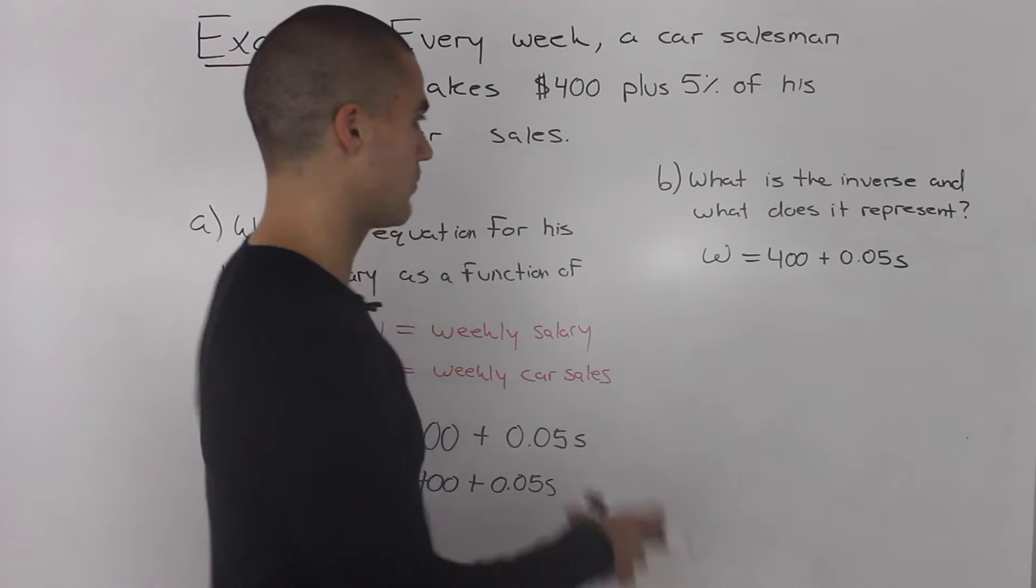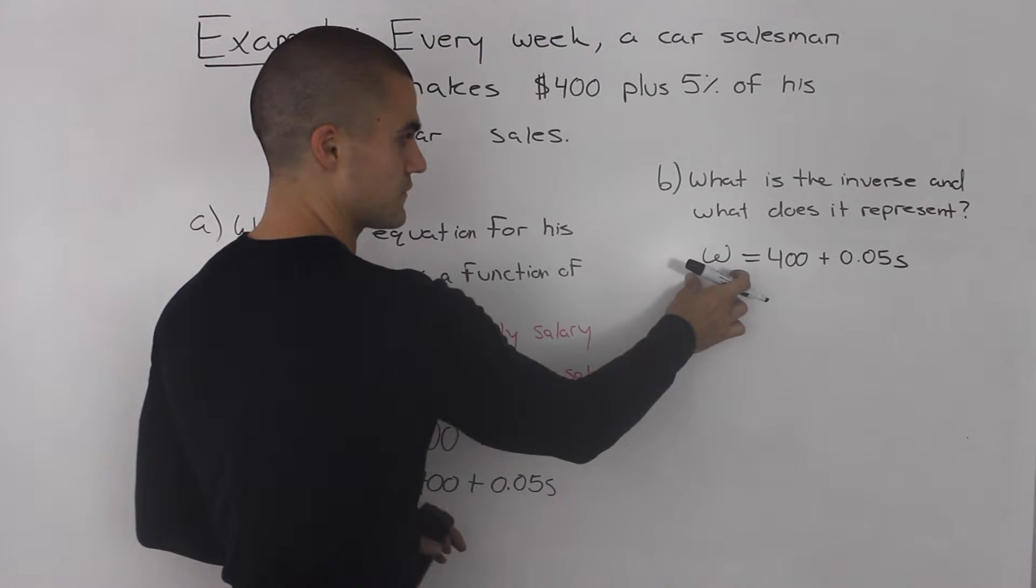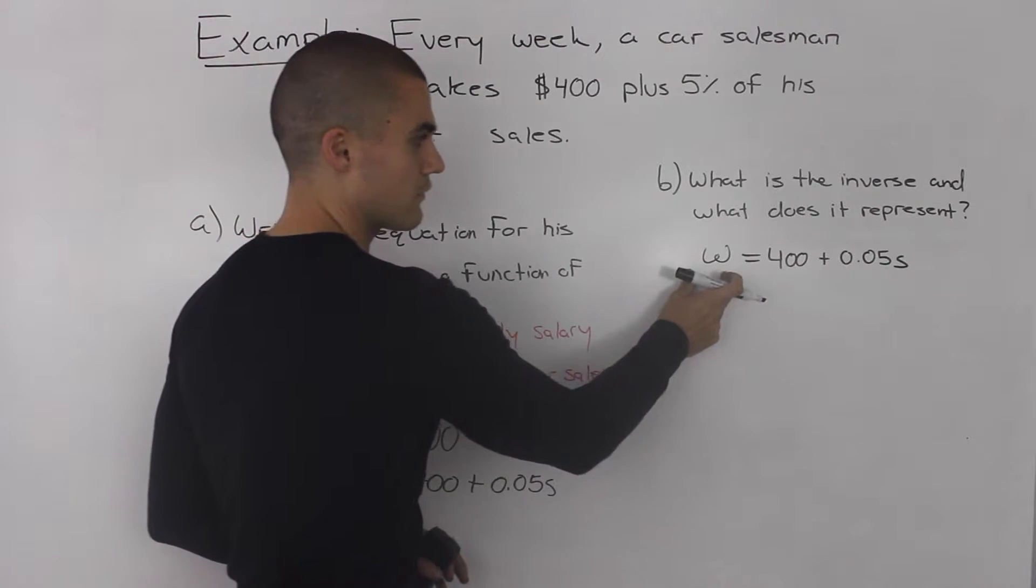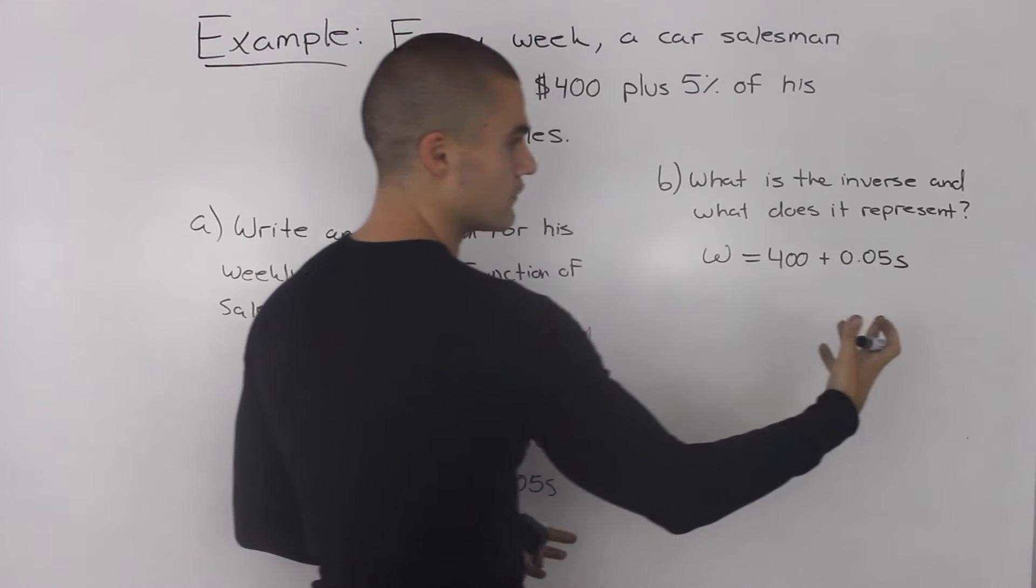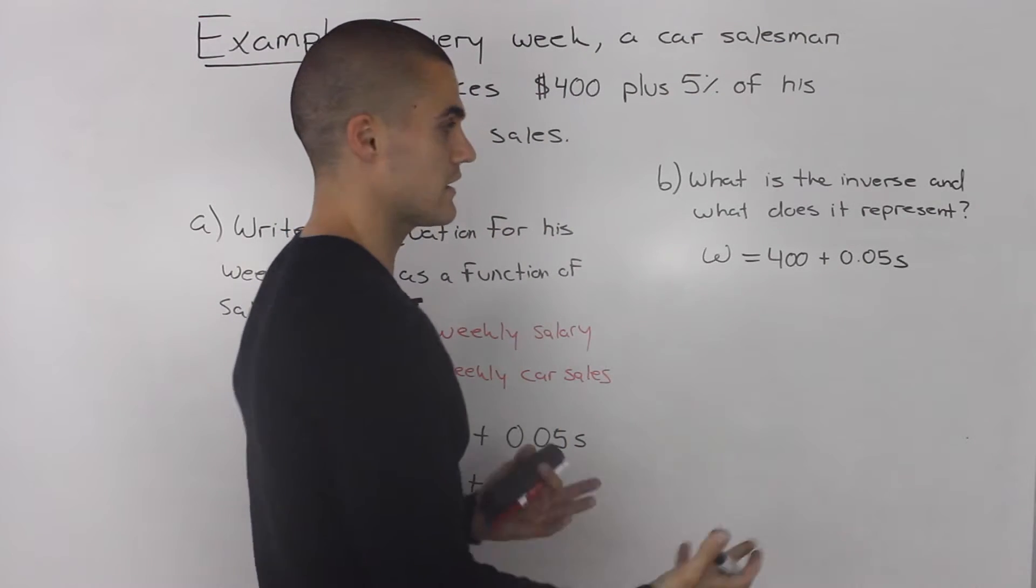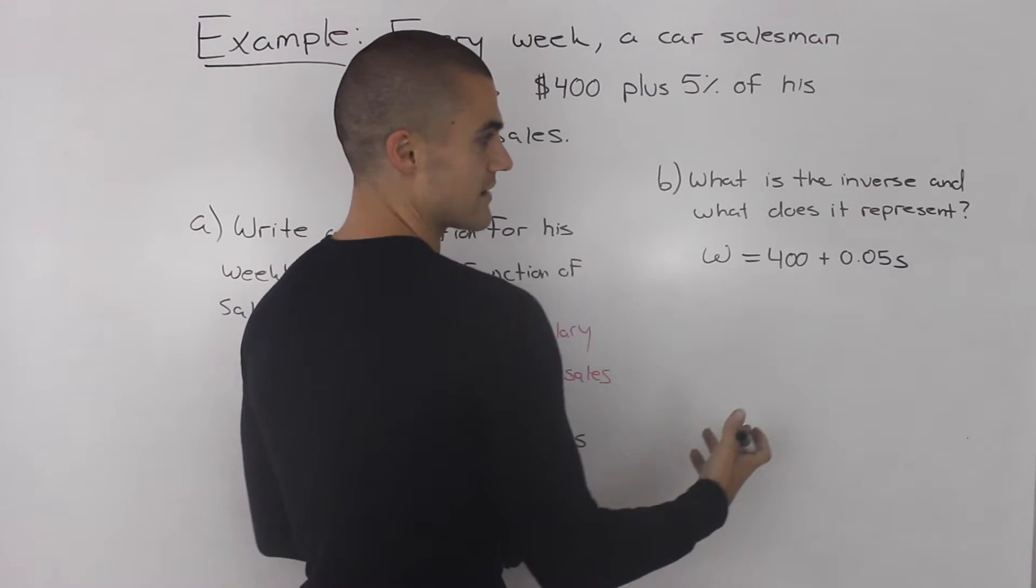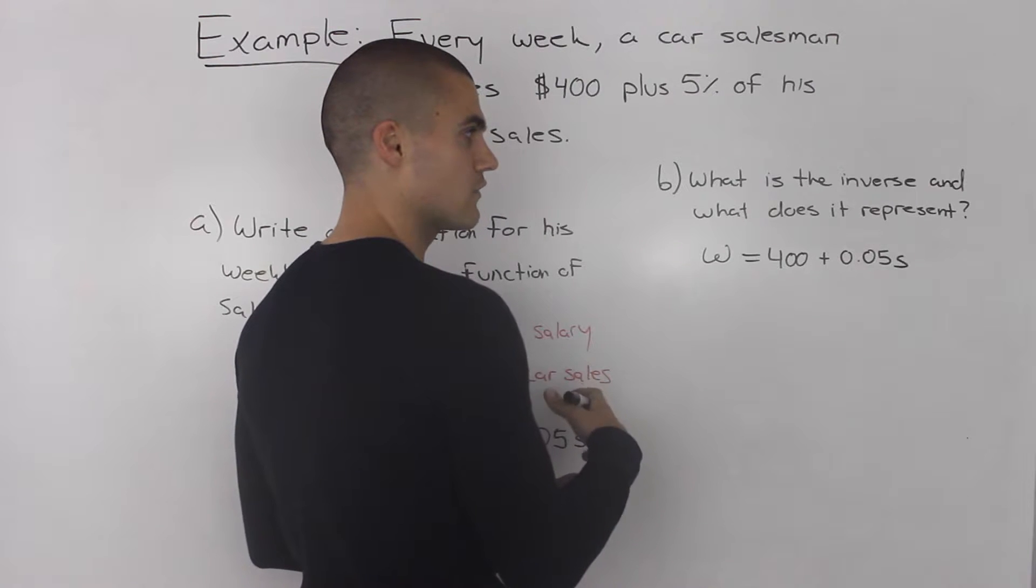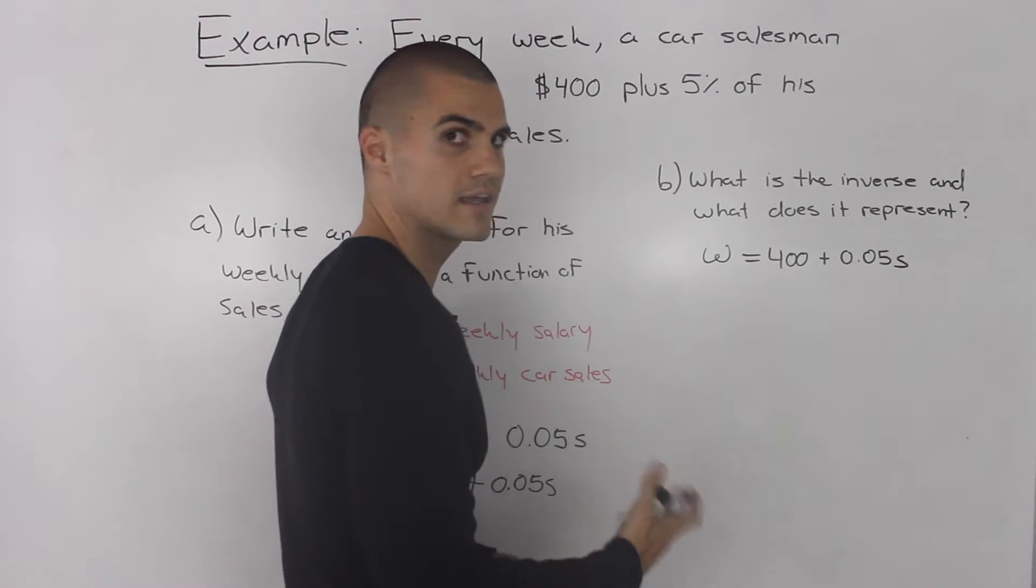Instead of, in part A, in this function, the W is the dependent variable and the S was the independent variable. Now, when we find the inverse, we're going to isolate for the S. The S will be the dependent variable and the W will be the independent variable.